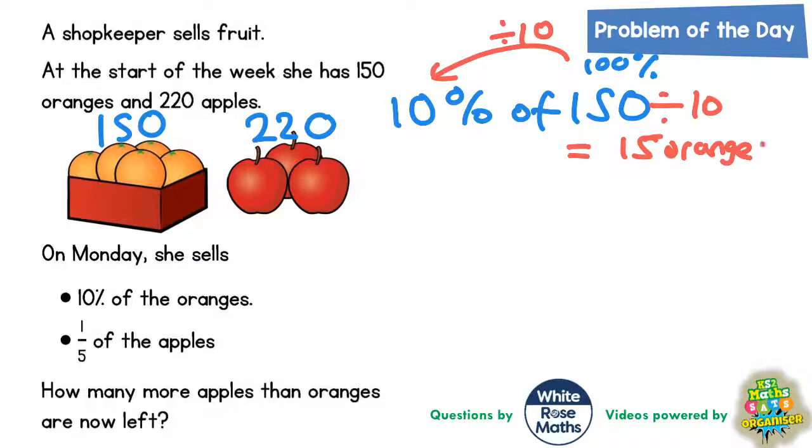So she is selling 15 oranges. Let's write that there. So 10% of the oranges is 15 oranges.